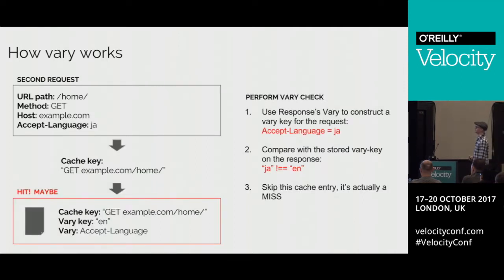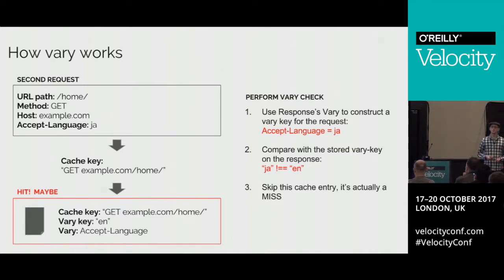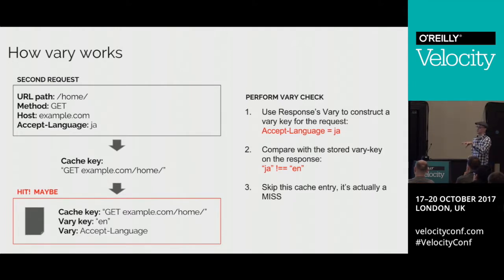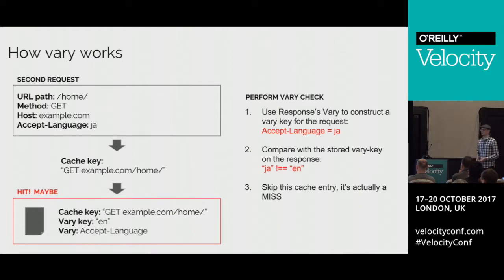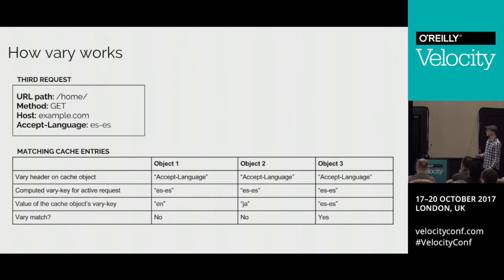When we get another request, this time for Accept-Language: ja, we compute the cache key — the algorithm is still the same, so we find a hit. But this item has vary rules, so we interpret those rules to check whether this object is actually usable for this request. In this case it isn't, because the Accept-Language on the request doesn't match the vary key on the stored asset. So we send this request to the back end as well.